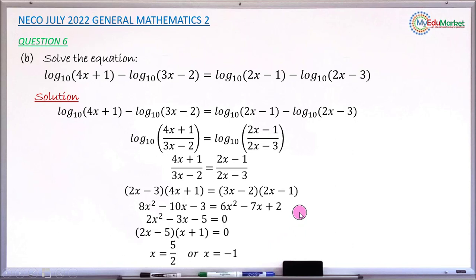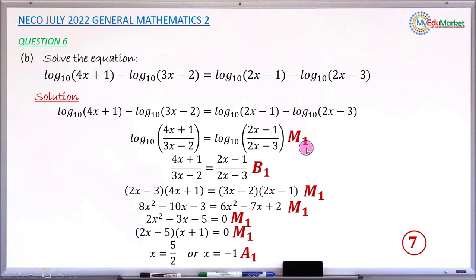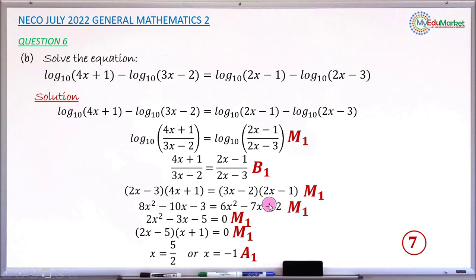Let me share the mark distribution for this question from the marking scheme. The first mark is a method mark: applying the law of logarithms correctly earns 1 mark. The next mark is for equating the two log arguments to form a normal equation, earning 1 mark. Cross multiplying earns another method mark of 1. Correctly expanding all four brackets earns another method mark of 1.